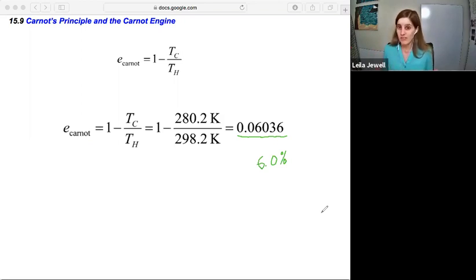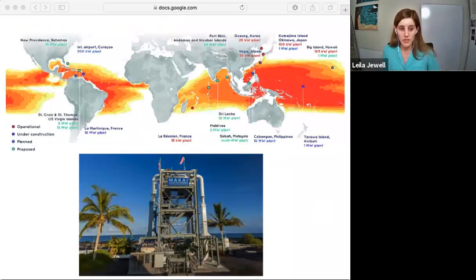But the advantage here is that the energy is already there. So this is something that's not just being discussed, it's actually, they're built currently around the world. So here's a map of some, this is known as OTEC, Ocean Thermal Energy Conversion, I believe.